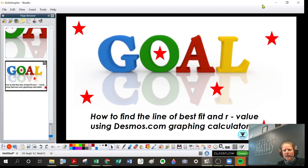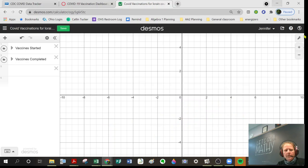So let's head on over to Desmos.com. In our last lesson, you learned how to make a scatter plot, so today we're going to build off of that. You can see I already have my data in here: vaccine started and vaccines completed.